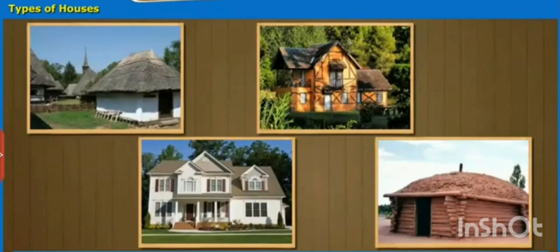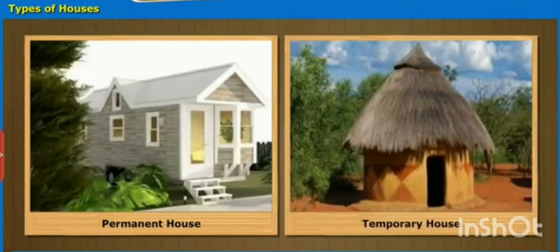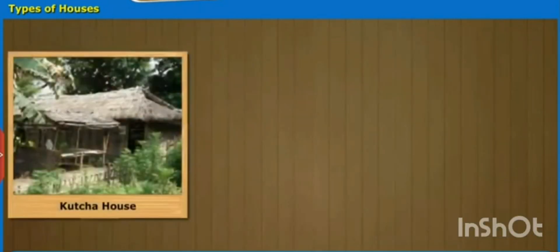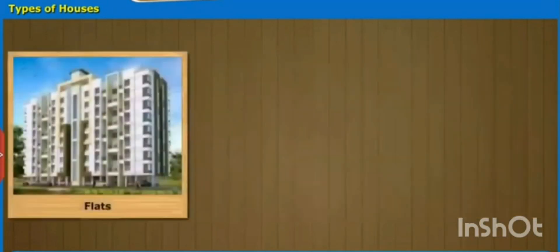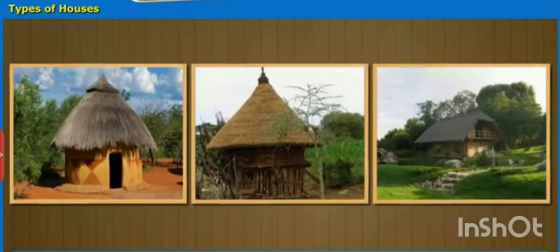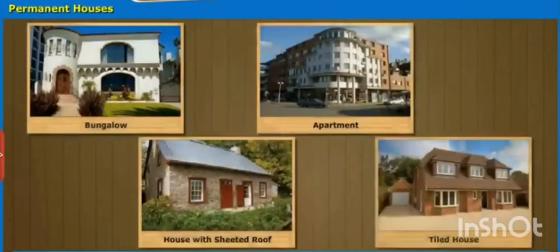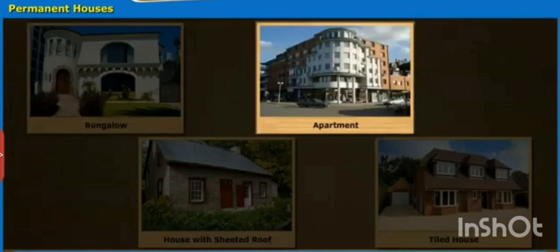Houses which are made up of concrete objects like cement, bricks, etc., and where people live for a long time, are called paka houses or permanent houses. Houses which are made up of leaves, straw, clay, etc., are called kacha houses or temporary houses. Permanent houses include bungalows, apartments, houses with sheeted roofs, and tiled houses.